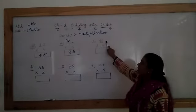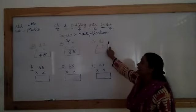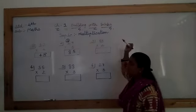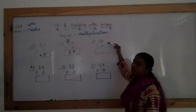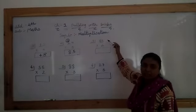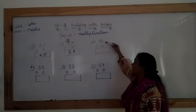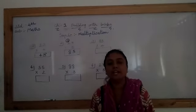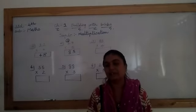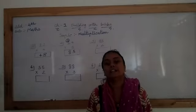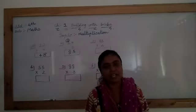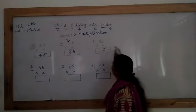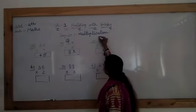Now third number, 85 into 4. 85 fours up? Here we are starting from again right side. 5 fours up. So for that which table we have to speak? Yes, 5. 5 ones up? Very good, 5. 5 twos up? Yes, 10. 5 threes up? Correct, 15. 5 fours up? Yes, 20. So here, we write 0. And 2. And 2 we have to carry.